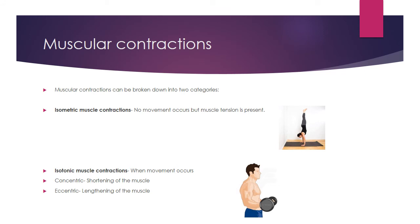Muscular contractions. We have two types: isometric and isotonic. An isometric muscle contraction is when no movement occurs but muscle tension is present — for example, a handstand or a plank, where tension is needed to hold the position but no movement occurs within the muscles. Isotonic muscle contraction is when movement occurs, and this can be broken into two subcategories: concentric, the shortening of the muscle, and eccentric, the lengthening of the muscle.